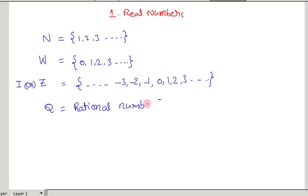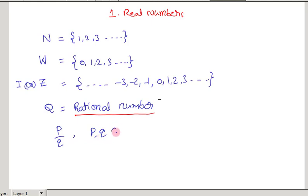Let us discuss about the definition of rational numbers. Rational numbers means the numbers which can be written in the form of P by Q, where P and Q belong to integers. Those numbers are called rational numbers.